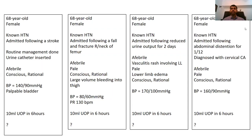The fourth case: a 68-year-old female, known hypertensive, admitted following abdominal distension for about one month and diagnosed with cervical carcinoma. On examination she is afebrile, pale, conscious, rational, blood pressure elevated at 160/90. Urine output is again low over the last six hours — same age, same gender, same background, but different causes.